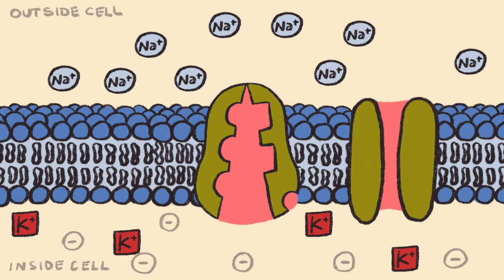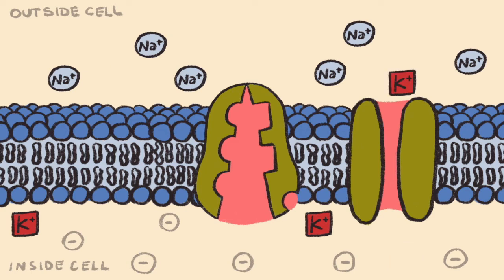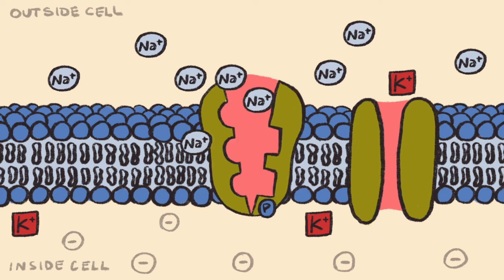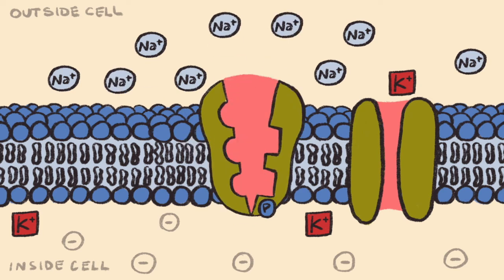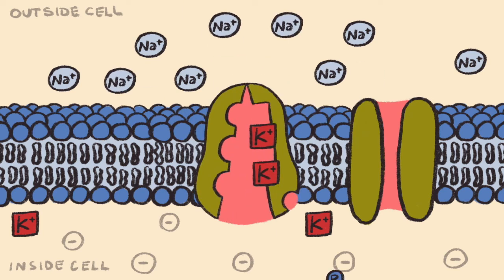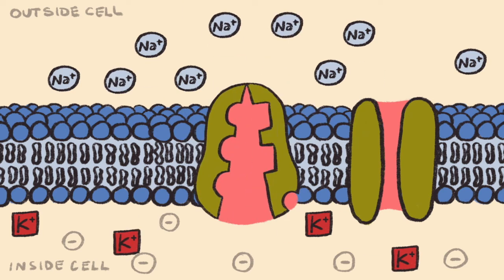By potassium leaking back outside the neuron, sodium-potassium ATPase pumps can pump the potassium back in and bring more sodium outside. In a way, this is sort of like recycling potassium so the sodium electrochemical gradient can be maintained at such a high level.